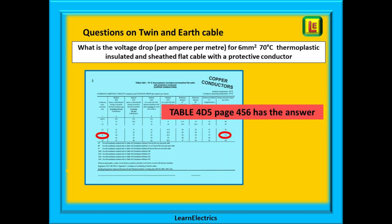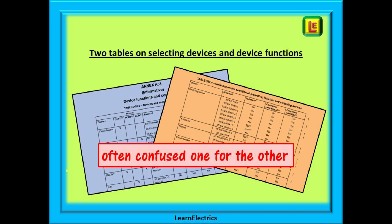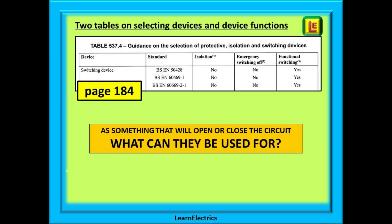And here we are on page 456, table 4D5, with our answer. Here we are showing two tables on selecting devices and device functions. Questions can be asked on one or both of these tables, and so many times exam candidates look at the wrong table — they are often confused one for the other. On page 184 is table 537.4. Look at the title: 'Guidance on the selection of protective, isolation and switching devices.' Think of this as something that will open or close the circuit — break the flow of electricity. Is it suitable for isolation? Can it be used for emergency switching? Can a fuse be used for emergency switching? Obviously no — by the time you got your screwdriver and spanner out and removed the fuse, you're long dead.